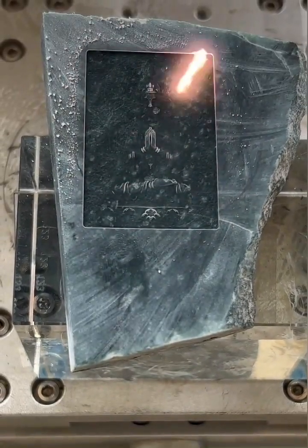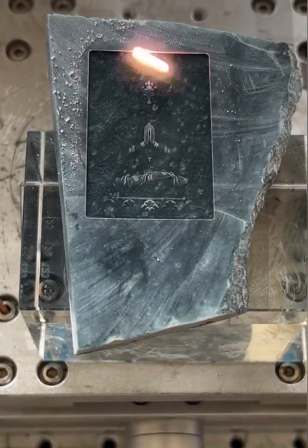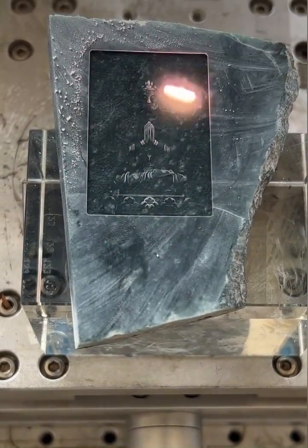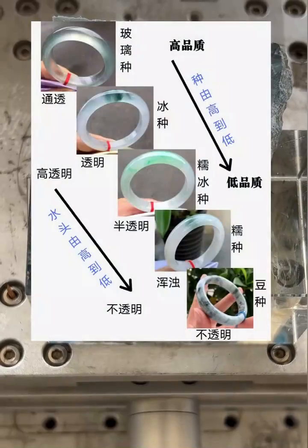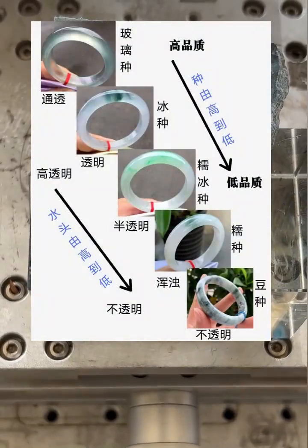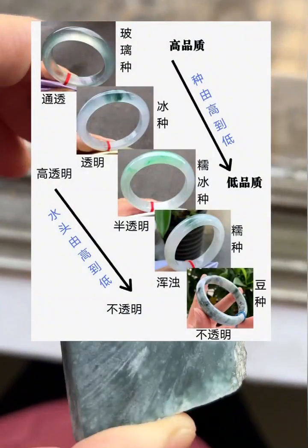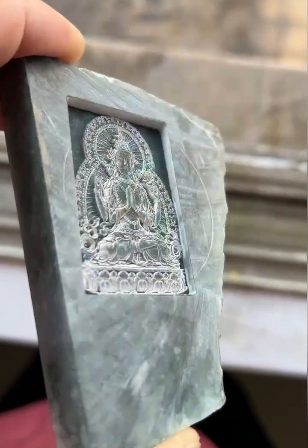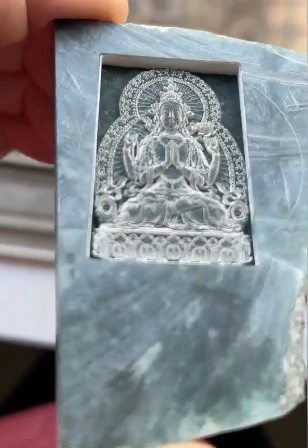Varieties include omphosite, blue water, floating blue flowers, and ink green. If the content of jadeite is high and mixed with some omphosite, it will form higher-end varieties of jade, such as blue water and floating orchid jade.